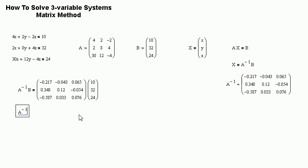All of this equals this. A to the negative one, times B. Let's see. Move it down. Equals. When you do all of this matrix math, it's this number times that number plus that number times that number equals this number. So, it's the negative 0.217 times 10 plus negative 0.043 times 32 plus 0.065 times 24. This all equals negative 2. So, that's the first one.